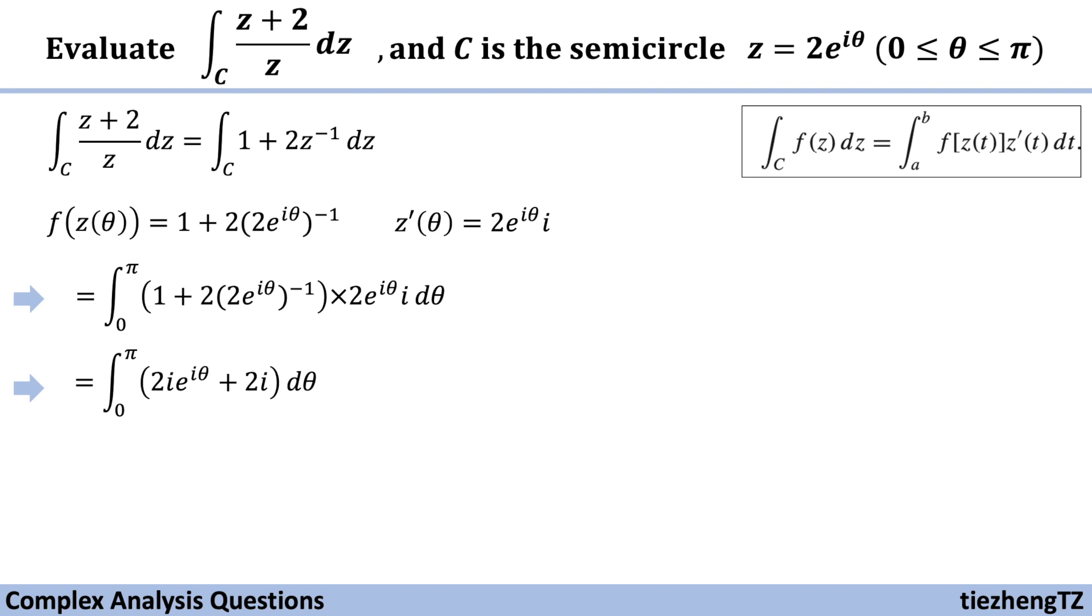And next, we need to find this antiderivative, which is 2 times e to the power of i theta, plus 2i times theta. And we are going to do the math from 0 to pi.